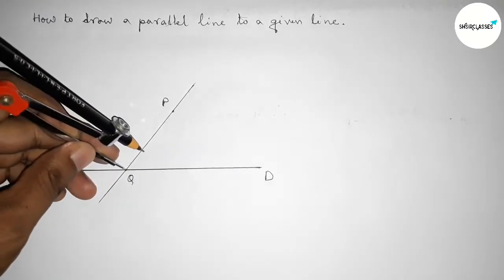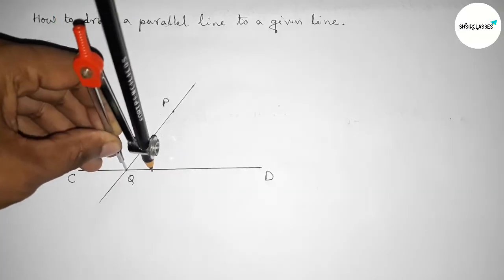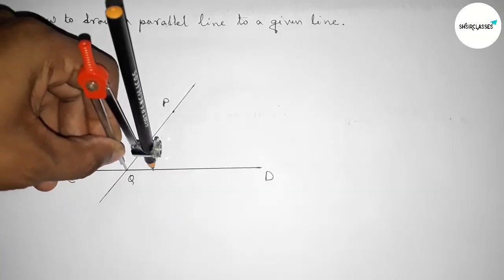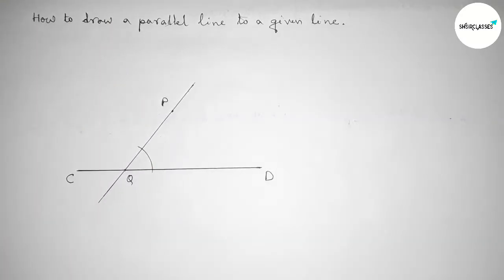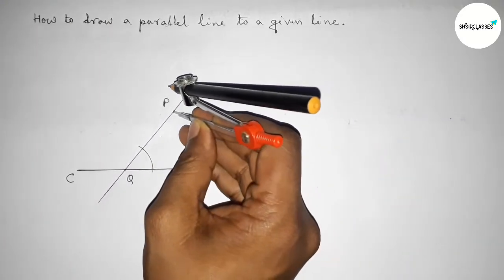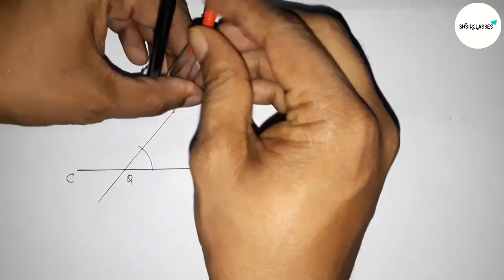So putting the compass on the point Q and taking any length and drawing an arc by this way. And with same length, we have to put the compass on the point P and drawing here an arc. So drawing here an arc by this way.